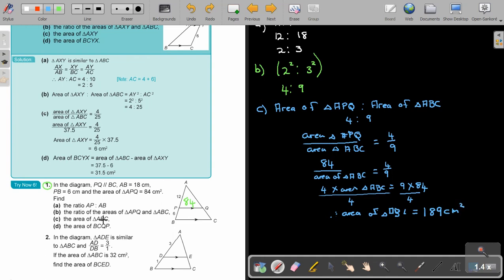And then there's, again, this is number D. It's almost like the previous one. So D, BCQP. So that is just the area. So here, BCQP, and that will be that 189, minus 84. And that will be 189 minus 84. And that will be my final answer.